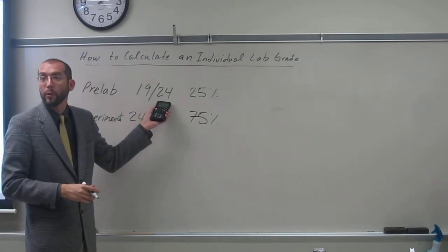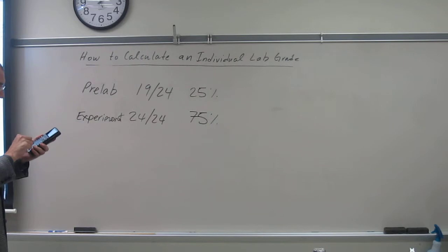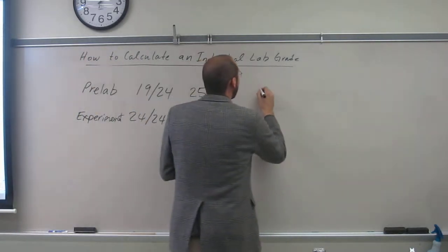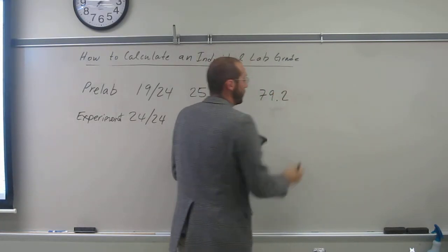Well, the first thing I have to do is calculate the percentage of this that I have. So, 19 divided by 24 times 100%, this is going to be 79.2.